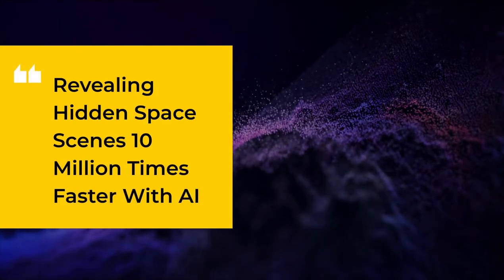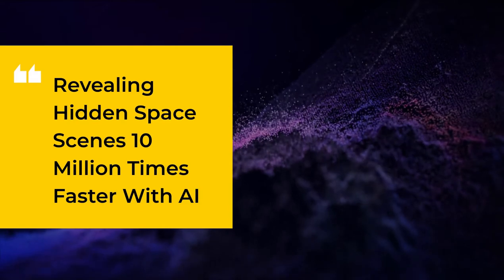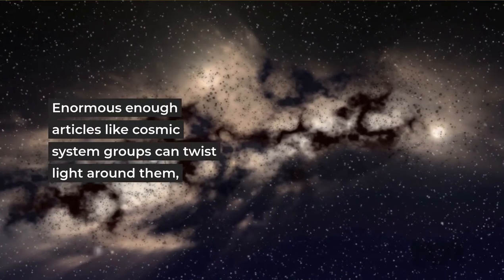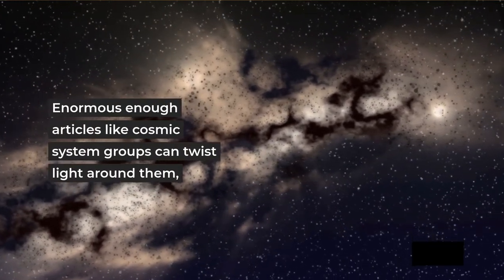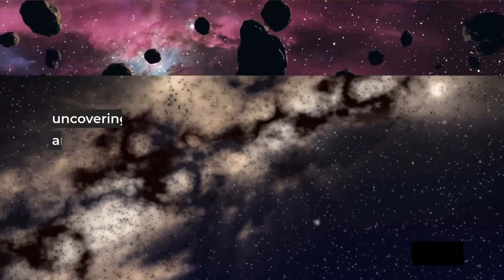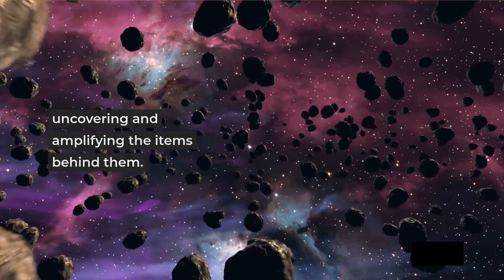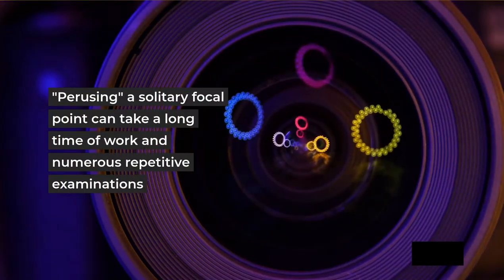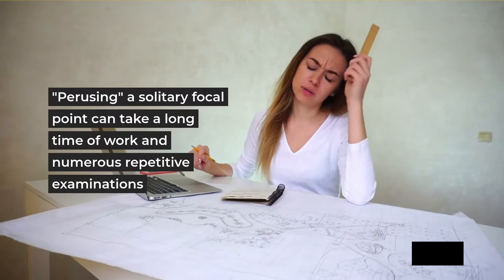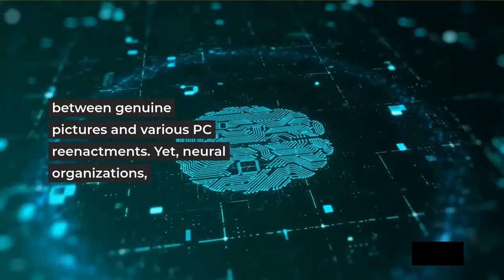9. Revealing Hidden Space Scenes 10 Million Times Faster With AI. Large enough objects like galaxy clusters can bend light around them, revealing and magnifying the objects behind them. Reading a single gravitational lens can take years of work and many repetitive comparisons between real images and various computer simulations.